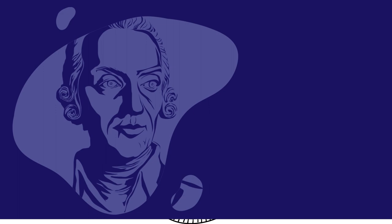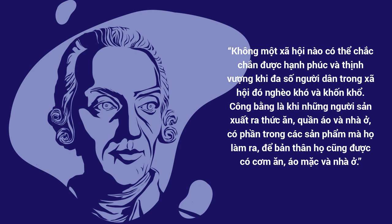As Adam Smith noted in 1776: 'No society can surely be flourishing and happy, of which the far greater part of the members are poor and miserable. It is but equity, besides, that they who feed, clothe and lodge the whole body of the people, should have such a share of the produce of their own labour as to be themselves tolerably well-fed, clothed and lodged.'